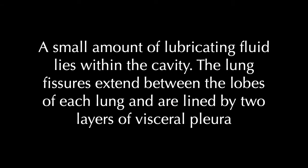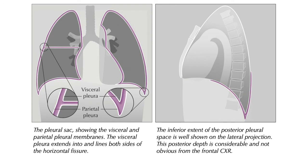A small amount of lubricating fluid lies within the cavity of the pleural space. The lung fissures extend between the lobes of each lung and are lined by two layers of the visceral pleura. Anatomically, the pleural sac shows the visceral and parietal pleural membranes. The visceral pleura extends into and lines both sides of the horizontal fissure. The inferior extent of the posterior pleural space is well known on the lateral projection at the costophrenic angles, and this posterior depth is considerable and not obvious from a PA or frontal chest radiograph.